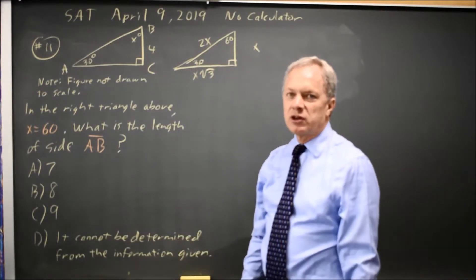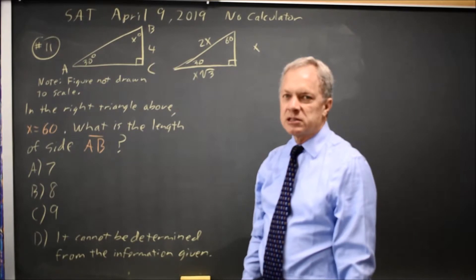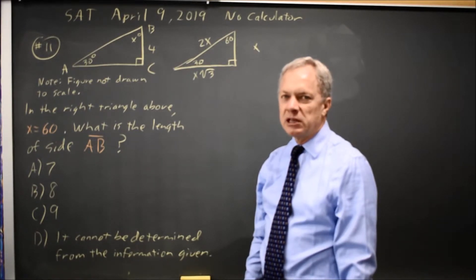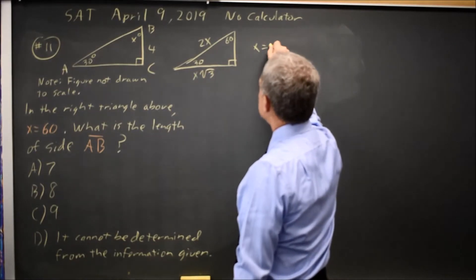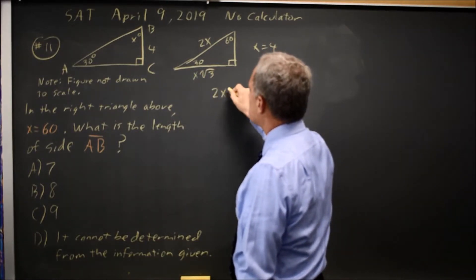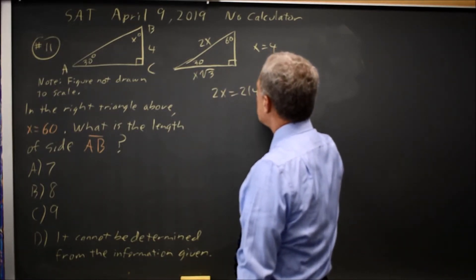If you're working with a 30-60-90 triangle and this is not something you remember immediately, check back and copy this. So if x equals 4, then 2x equals twice 4 equals 8.